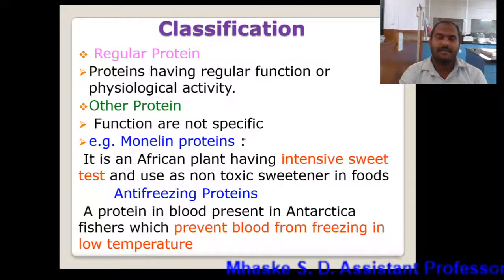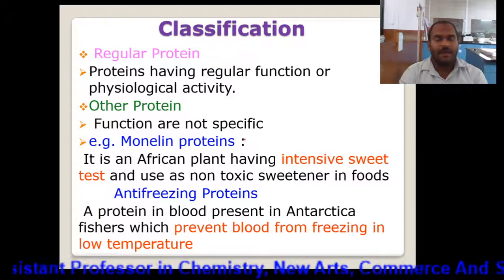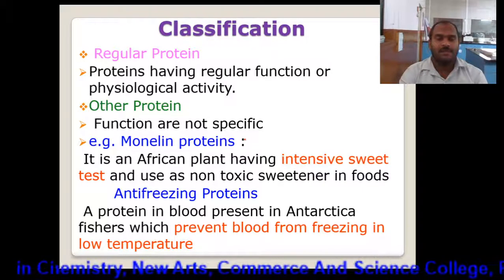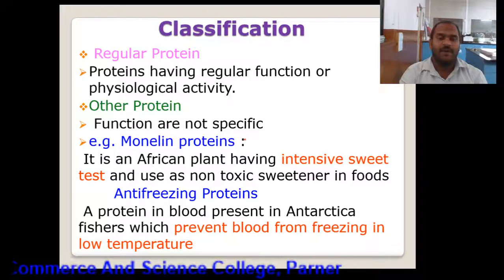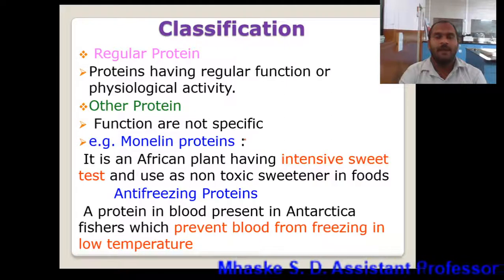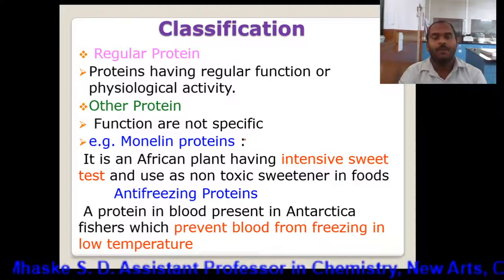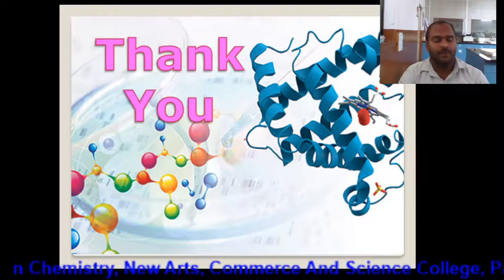So classification of protein is based on three properties: composition, shape, and function. On the basis of composition, they are classified into three classes. On the basis of shape, they are classified into two classes. And on the basis of function, they are classified into seven classes. So here we will stop the discussion regarding the classification of protein. Thank you very much.